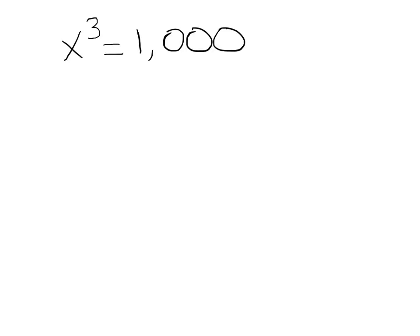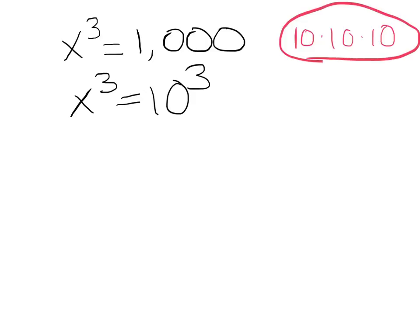I could rewrite this as x cubed equals 10 to the third, because I know that 10 times 10 times 10 would equal 1,000. So I'm just going to rewrite it like that.